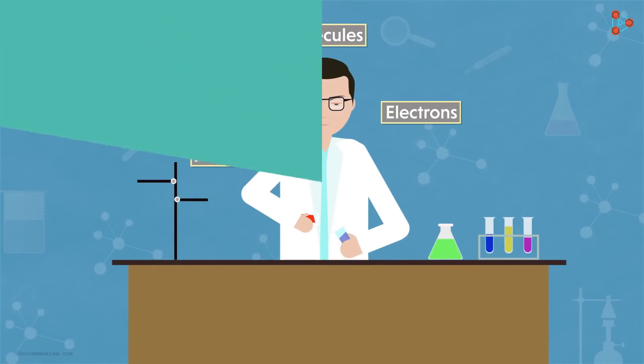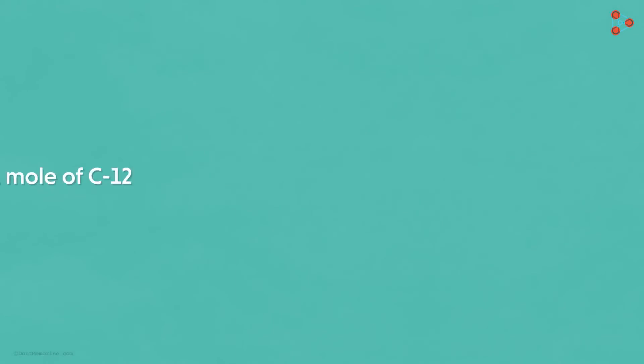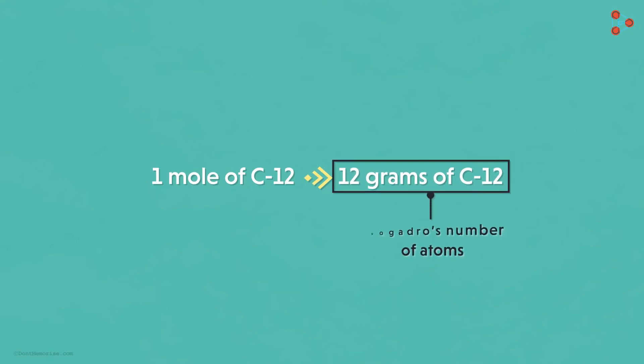Let's talk about one last concept. We know that one mole of carbon-12 is 12 grams of carbon-12. That's because 12 grams of carbon-12 has Avogadro's number of atoms. Now let me ask you a question.